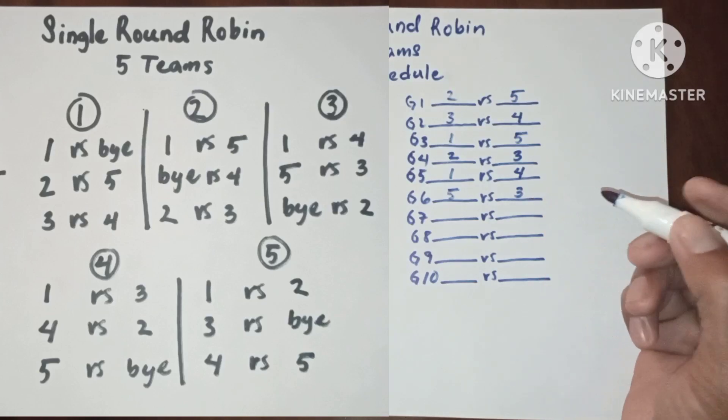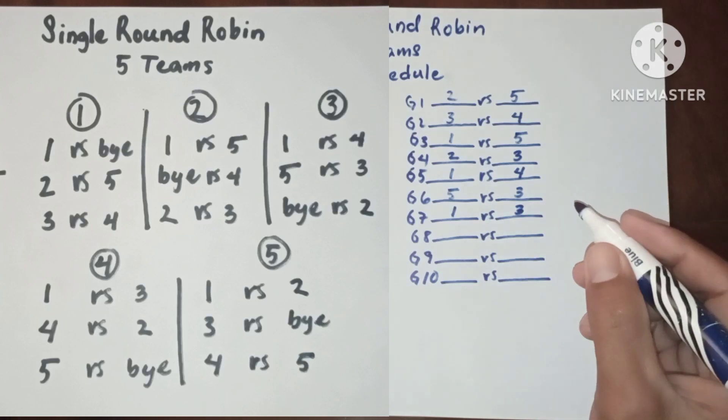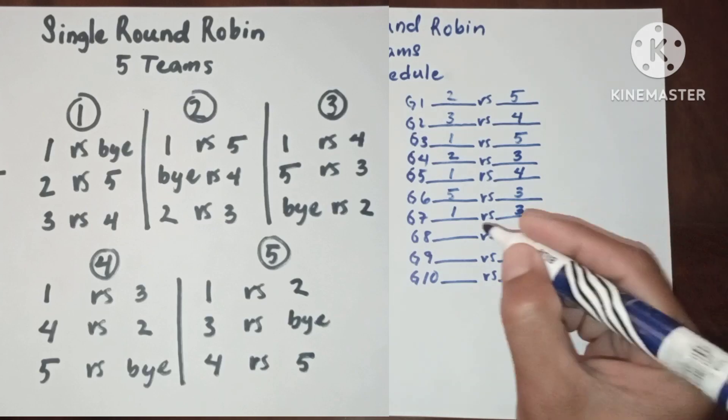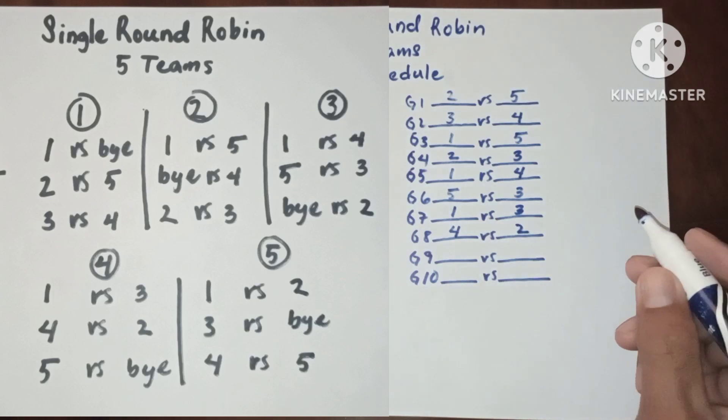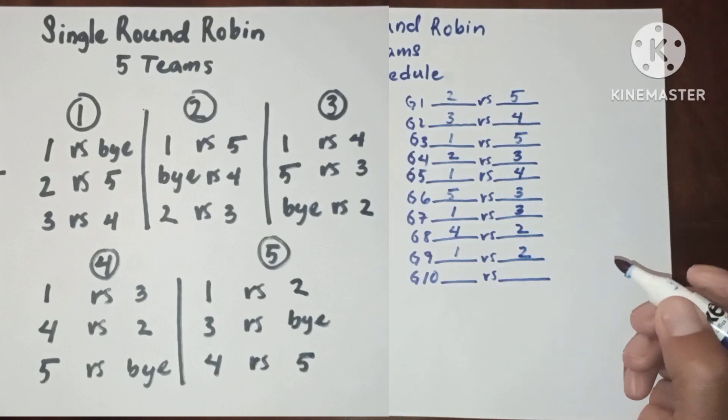In round four we have one versus three, four versus two. In round five we have one versus two, four versus five.